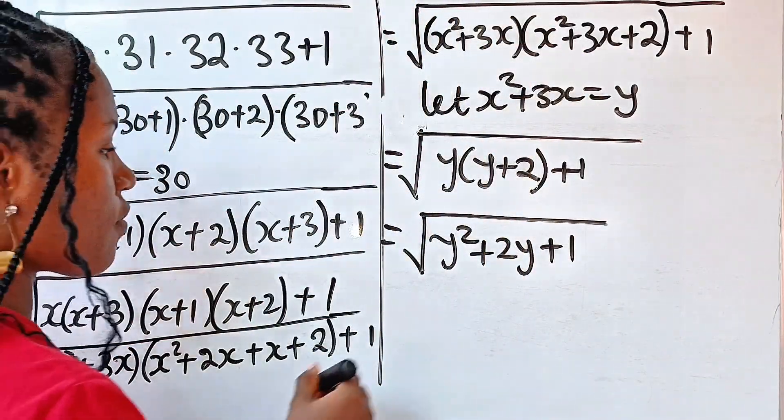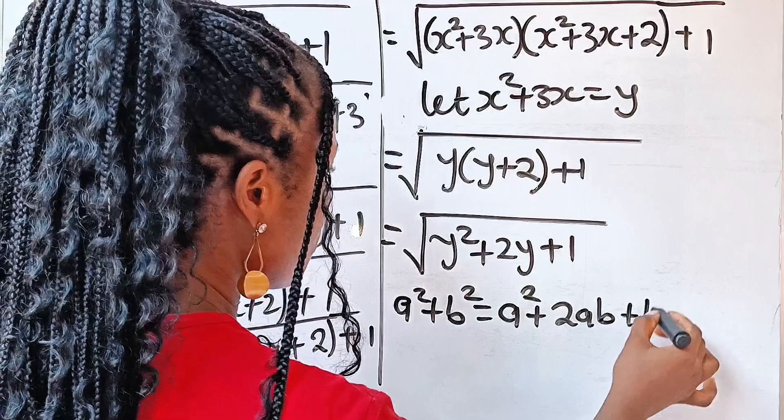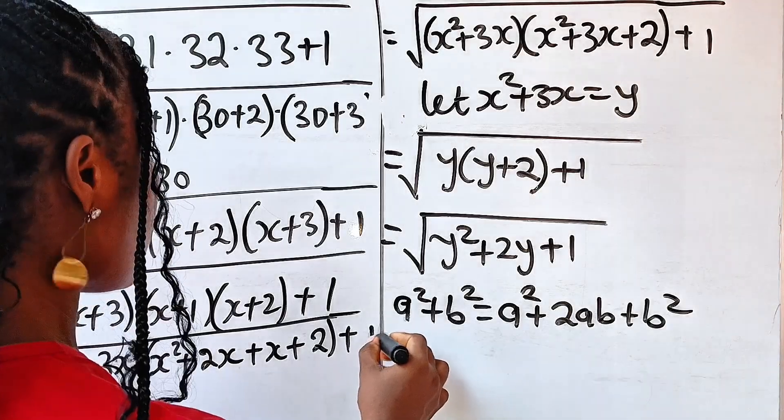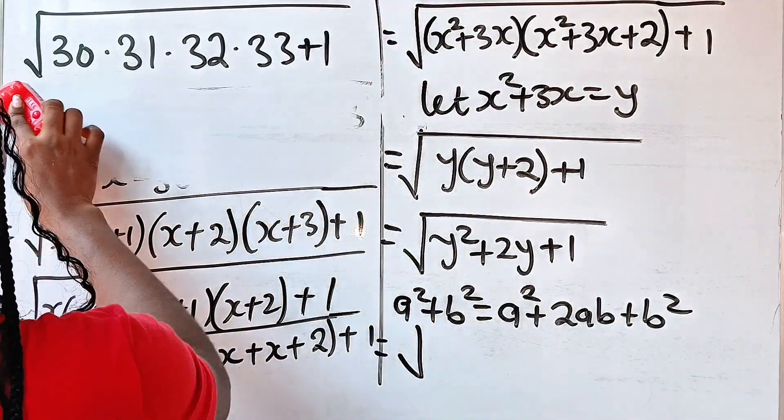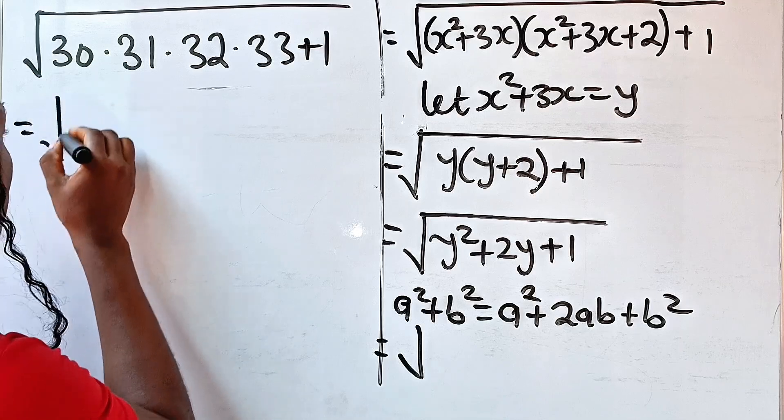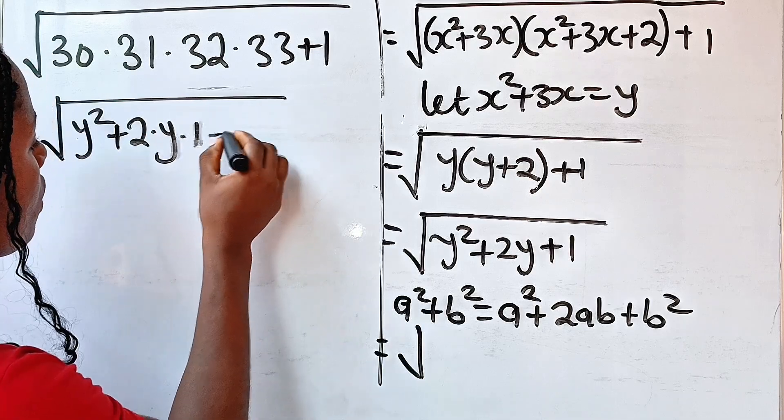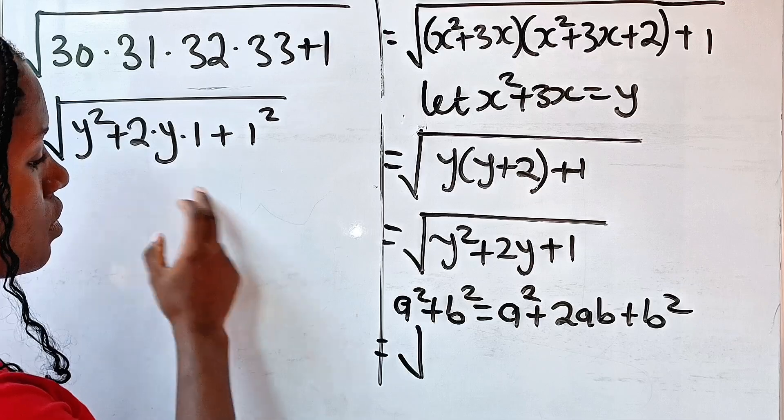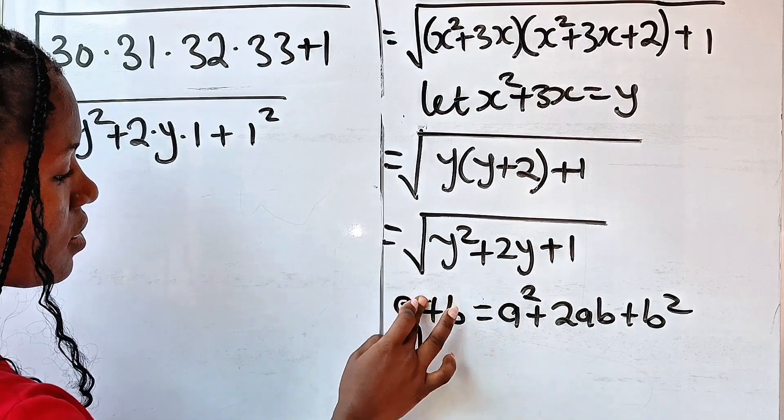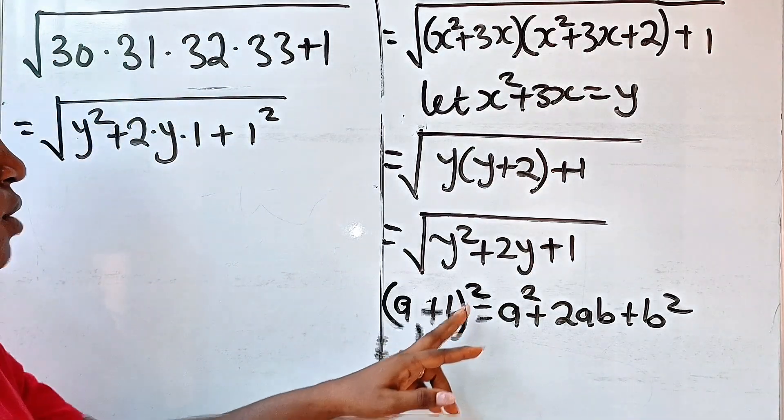Yeah, now recall that when you have a plus b squared, that is equal to a squared plus 2ab plus b squared. Now, let us express this. Let us expand this. If we do that, we are going to have the square root of, let me continue from here. I don't want to write it where you cannot see it clearly. So if we expand this, this will be square root of y squared, plus 2 multiplied by y multiplied by 1 plus 1 squared. So if we compare this to this, that means our a is y and our b is 1. Sorry, this is a plus b squared. Oh, God. This is a plus b squared, not a squared plus b squared, sorry. So this is a plus b squared.